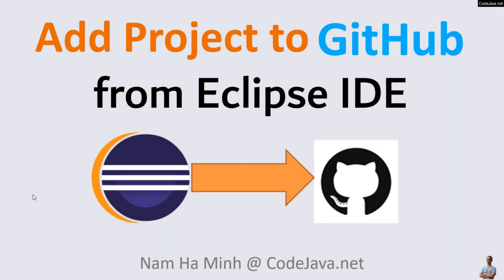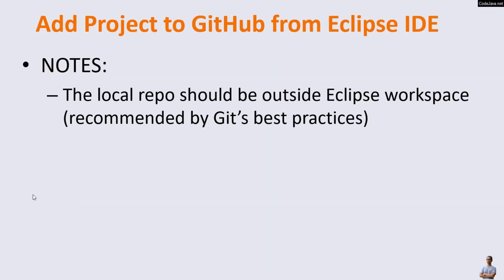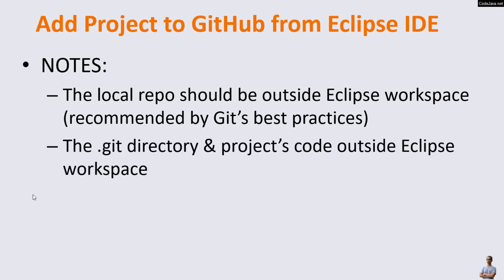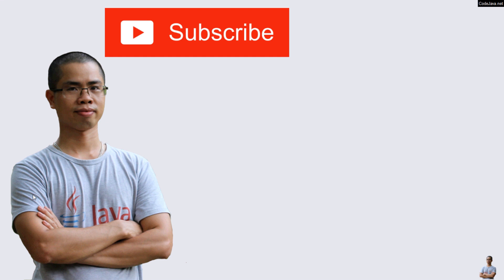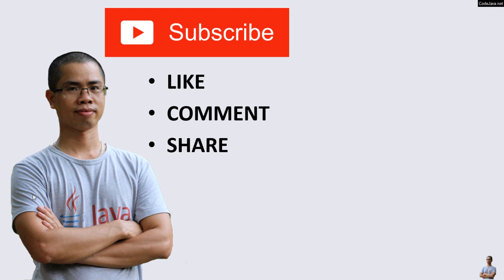So far you have learned how to add a Java Maven project to GitHub from Eclipse IDE step by step. Note that the local repository should be outside the Eclipse workspace, as recommended by best practices — meaning the .git directory and the project code should be outside the Eclipse workspace. I hope you found this video helpful. Please subscribe to my channel, like, comment, and share this video.